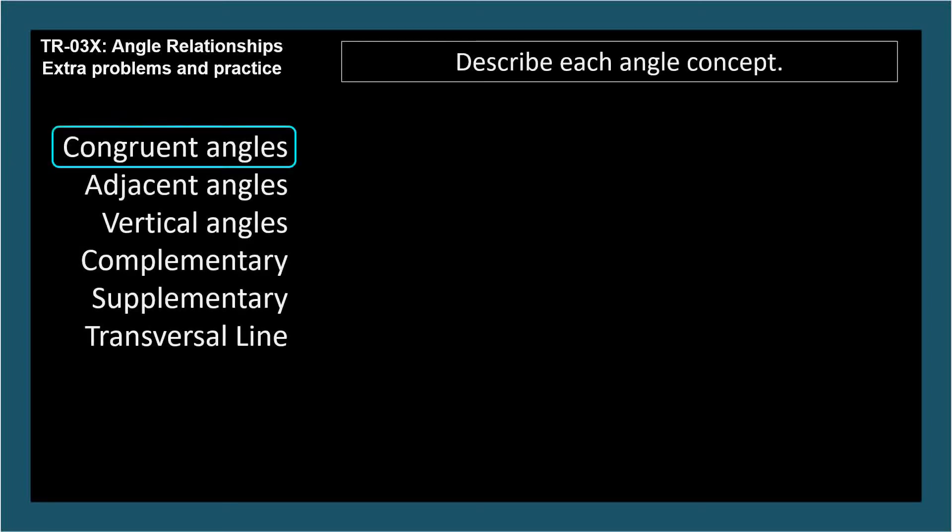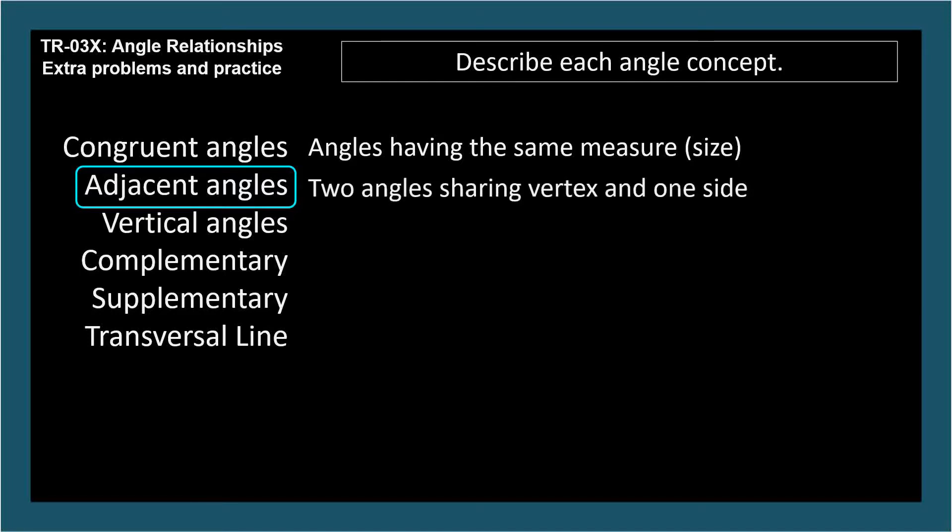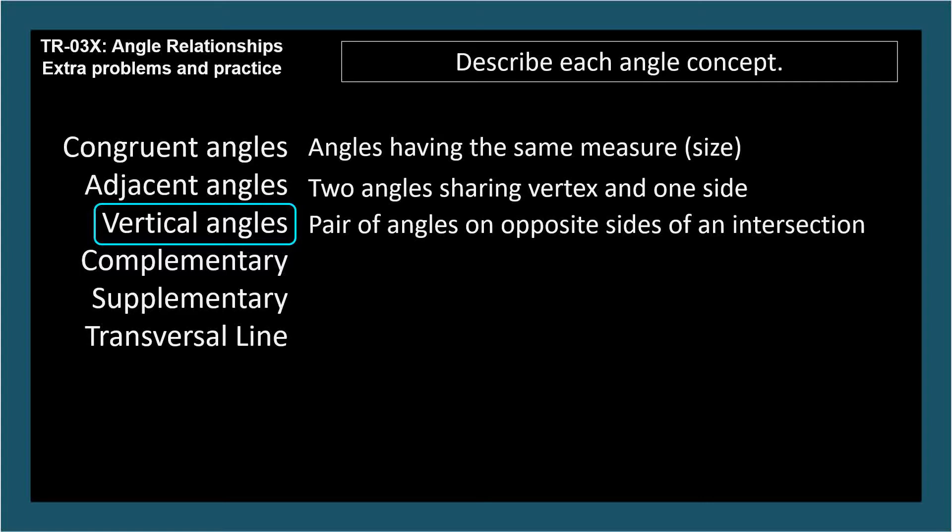Congruent angles are angles having the same measure or size. Adjacent angles are two positive angles sharing their vertex and one side. Vertical angles are a pair of angles on opposite sides of an intersection.